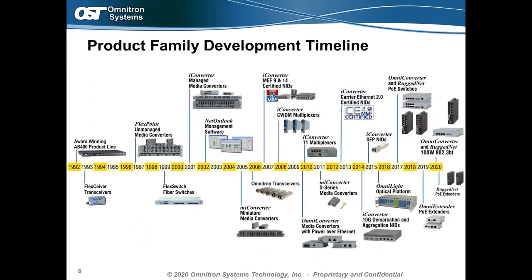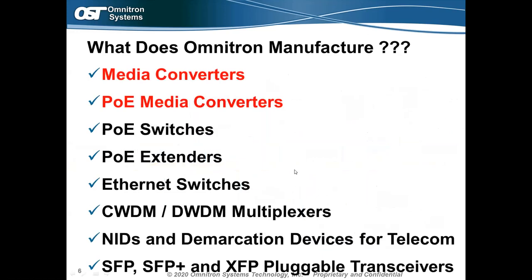Here's a quick look at our product family development timeline showing that Omnitron continuously engineers and launches new products. We've been making unmanaged media converters since 1997, adding management and carrier Ethernet functionality over the years, as well as PoE media converters for the last 10 years. Omnitron manufactures media converters, PoE media converters, PoE switches and extenders, Ethernet switches, CWDM and DWDM multiplexers, network interface devices, and SFP, SFP+, and XFP transceivers for 10-gig applications.